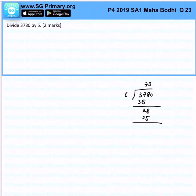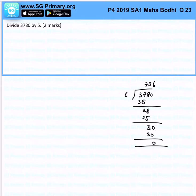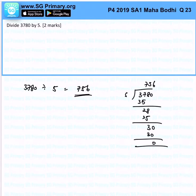5 times 5 is 25, which leaves us with 30, and subsequently 6 times 5 will be 30. We realize that there's no remainder, so 3780 divided by 5 gives us 756. That's the answer for this question.